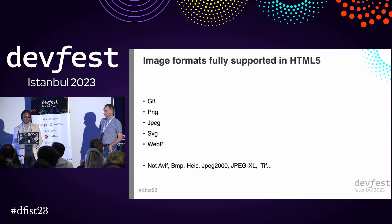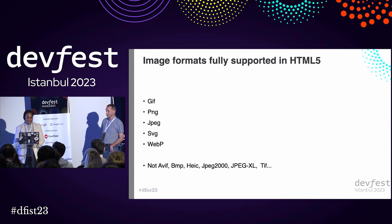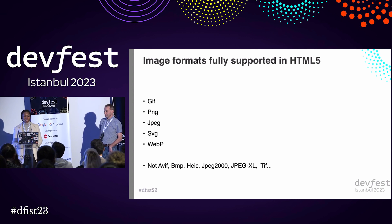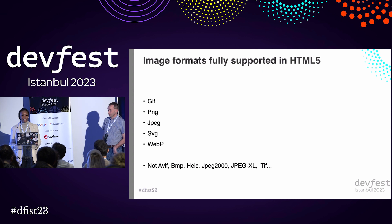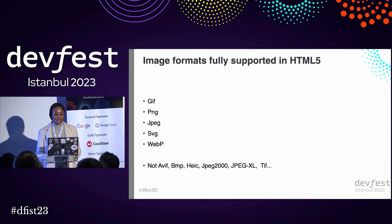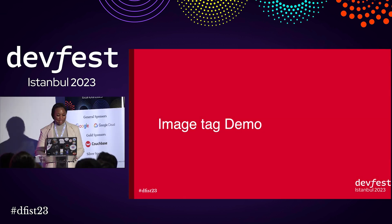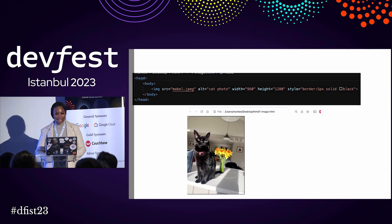GIF was really popular back in the day but PNG is now more popular. PNG is a lossless file format so when it is compressed and decompressed it still keeps most of its details. However, JPEG is a lossy file format so when compressed and decompressed it loses some detail and image quality changes — that is mostly used for images. And SVG is a graphic format. Mark is going to show an image tag demo.